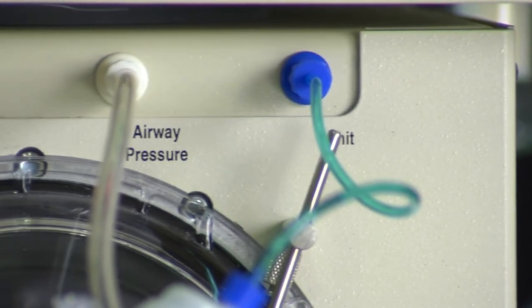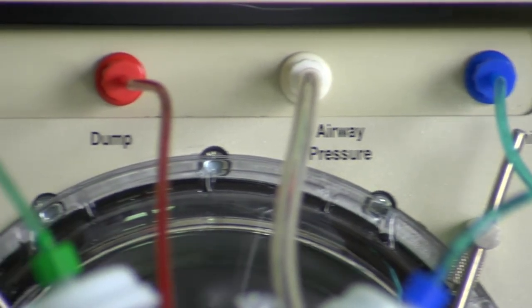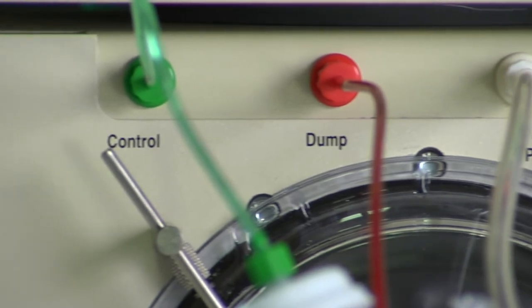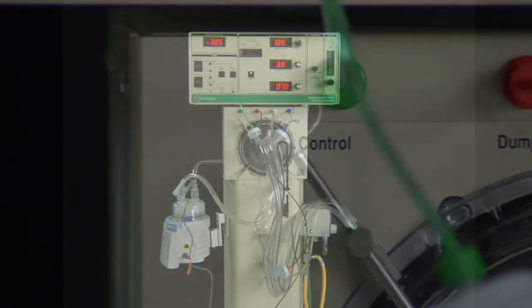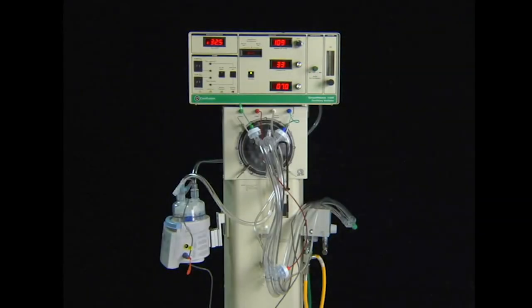The 3100A and 3100B are very simple devices. These are essentially large CPAP generators with a piston diaphragm oscillator attached. This system allows the 3100 to gently inflate the lungs while superimposing oscillations to ventilate the patient.